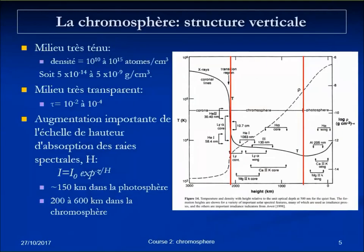Looking at the vertical profile, with the Sun on the right, you see the photosphere and then the chromosphere. The range of density is much lower than in the photosphere — already close to a good vacuum. Another consequence is that it's a highly transparent medium, with an optical depth of 10⁻² to 10⁻⁴. The scale height for absorption in spectral lines jumps from about 150 kilometers in the photosphere to more than 500 kilometers in the chromosphere.